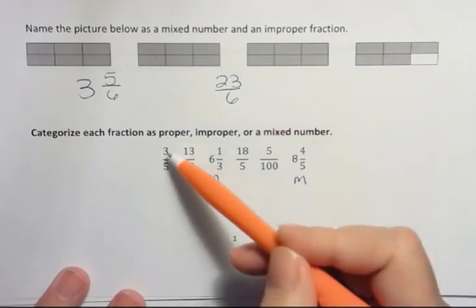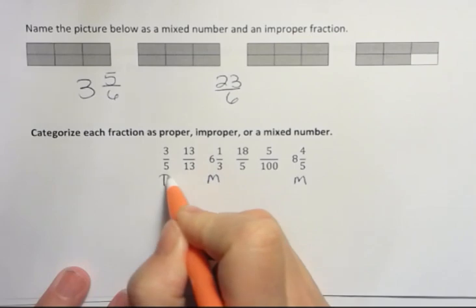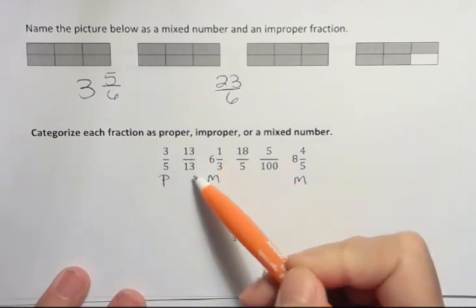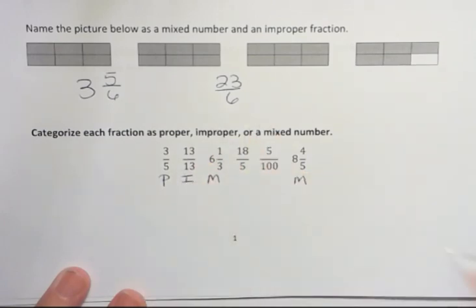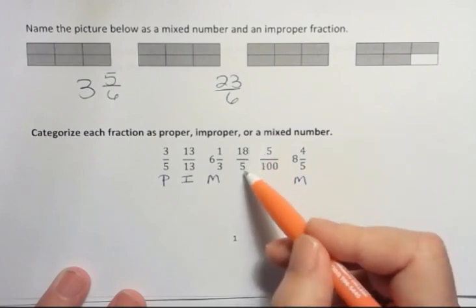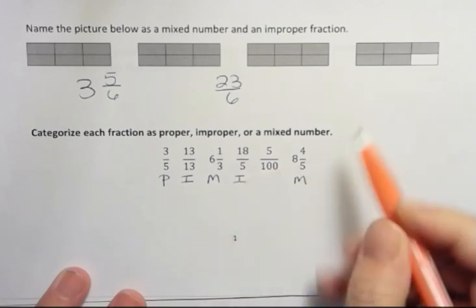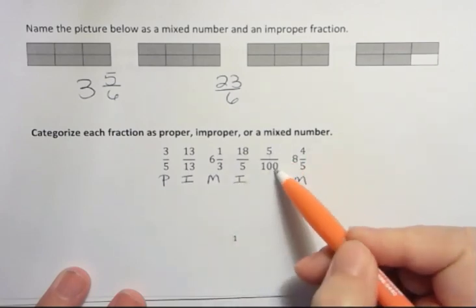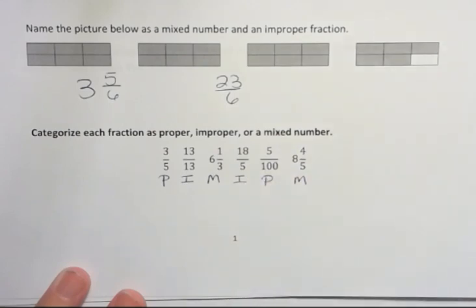What about 3 fifths? Well, 3 is less than 5, so that's a proper fraction. What about 13 over 13? Remember our definition was that if it's equal to each other, that's improper, so that's an improper fraction. 18 over 5, the denominator is less than the numerator. Again, that's an improper fraction. And finally, 5 over 100, the numerator is definitely less, so that's a proper fraction. All right, have a great day. We'll see you next time.